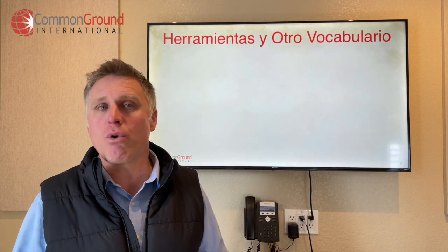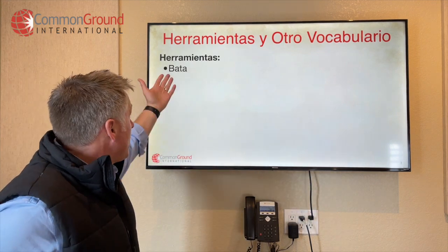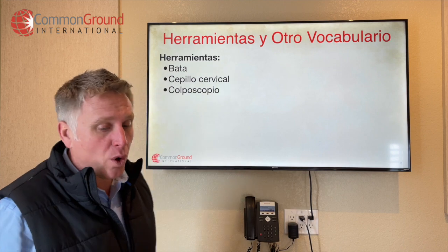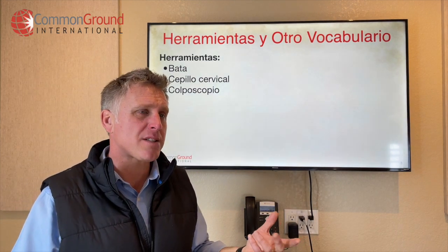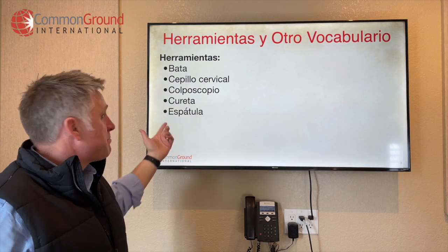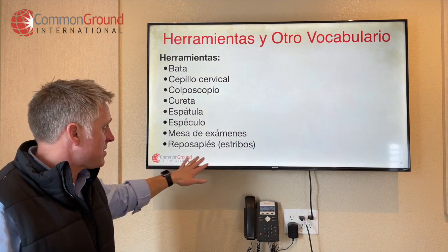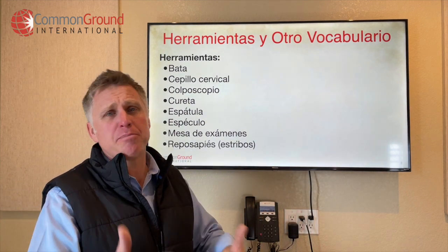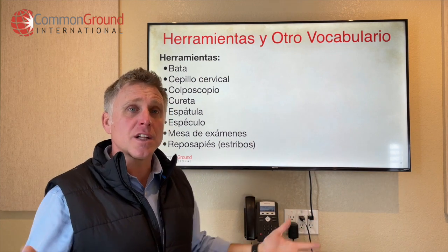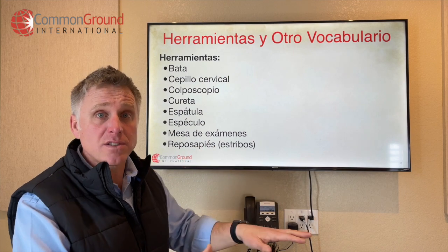Let's look at some herramientas y otro vocabulario — not necessarily all tools but common items you talk about in the consult room. Bata — not really a tool but a gown. Cepillo cervical — like a cervical brush. Colposcopio — not the procedure but the actual colposcopio instrument. Cureta — curette. Espatula — spatula. Especulo — speculum. Mesa de exámenes — the exam table. Reposapiés or estribos — stirrups. Estribos is the literal translation; it has all the same uses as stirrup in English — horses, exam tables, etc. But reposapiés, meaning footrest, might be super easy to use as well.